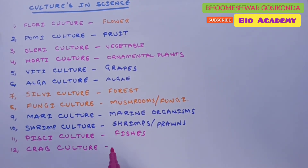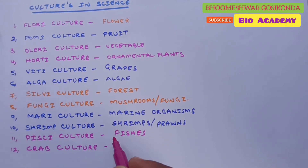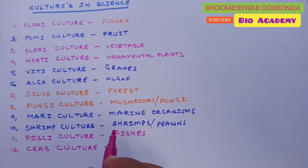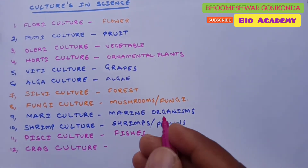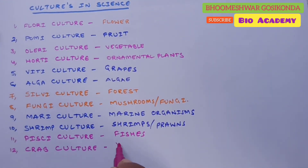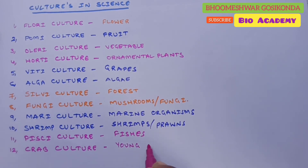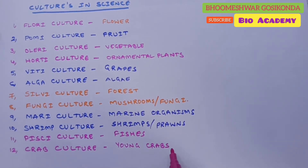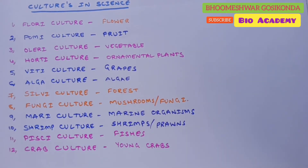Next is crab culture. In crab culture, young crabs are grown for a period of five to six months until they attain a desirable or market size.